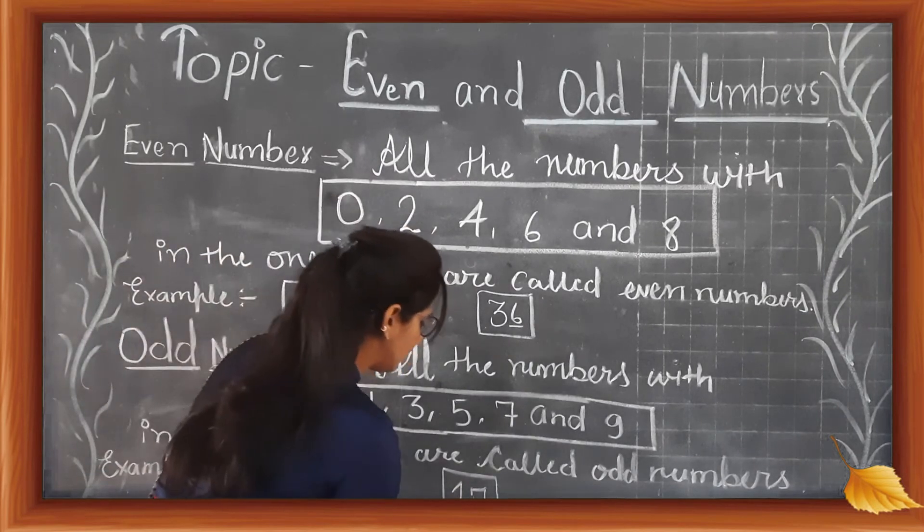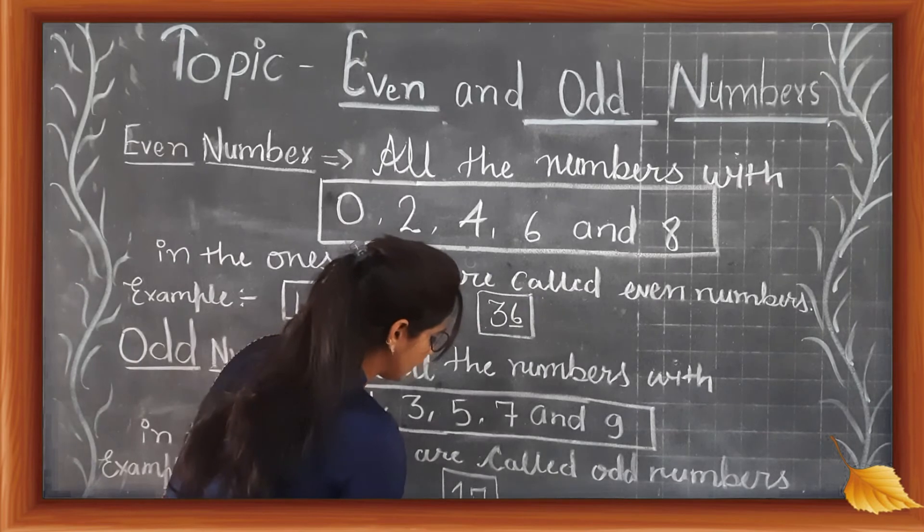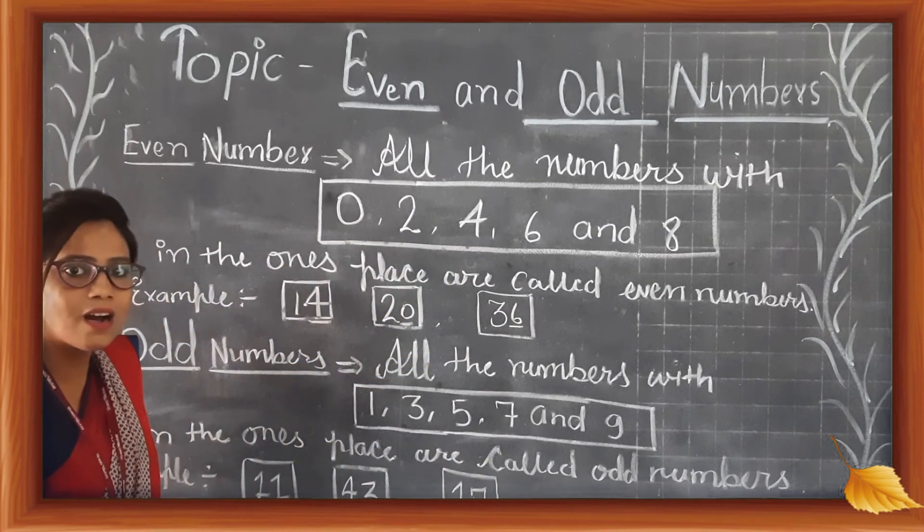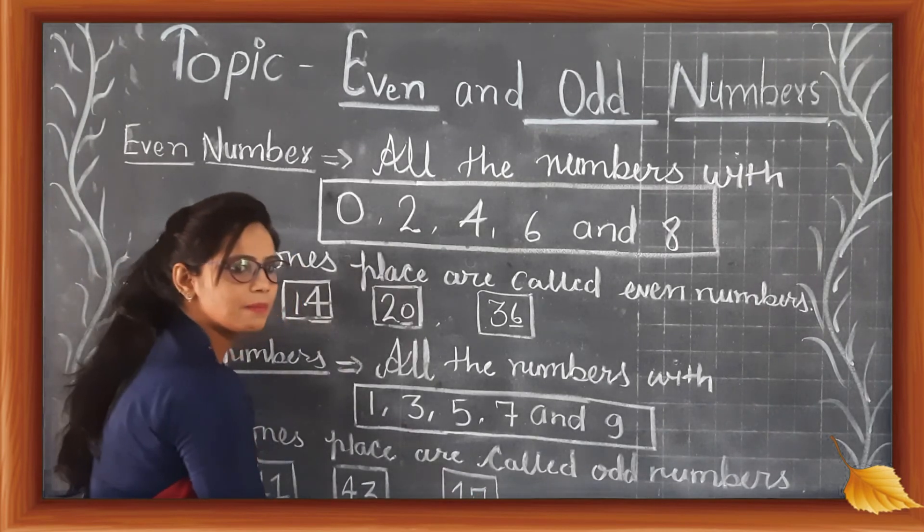Now 17. In the ones place is 7. What is 7? 7 is an odd number, so 17 is an odd number.